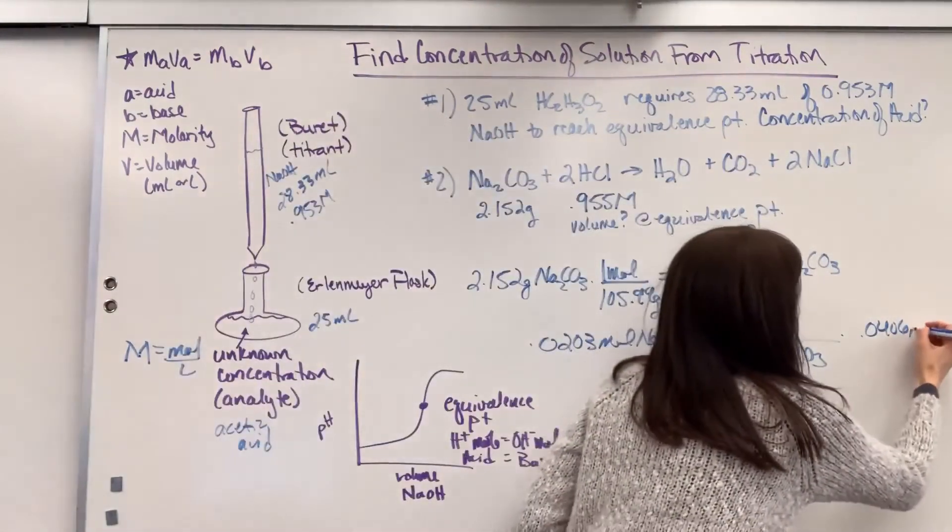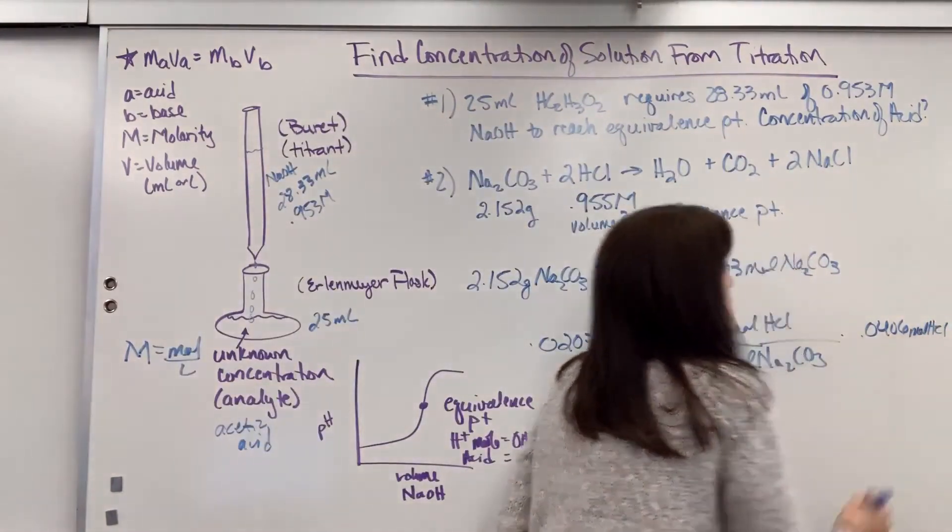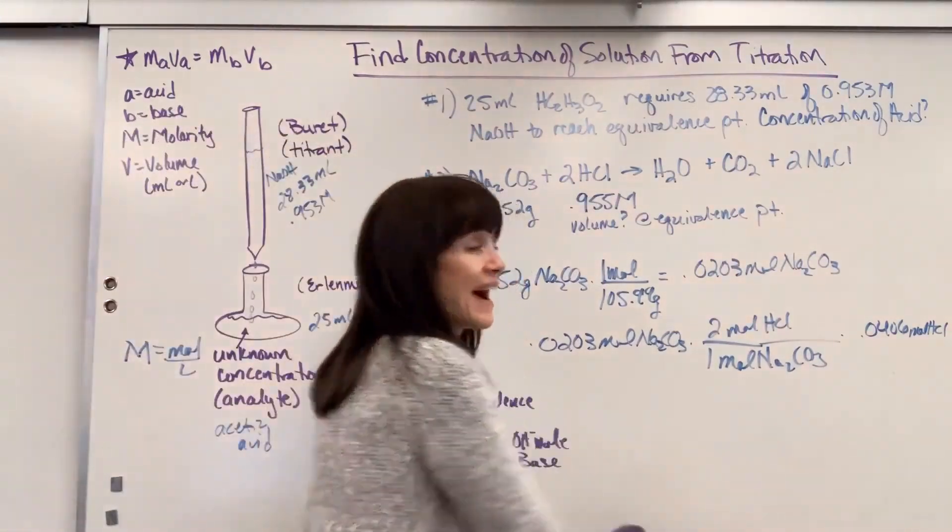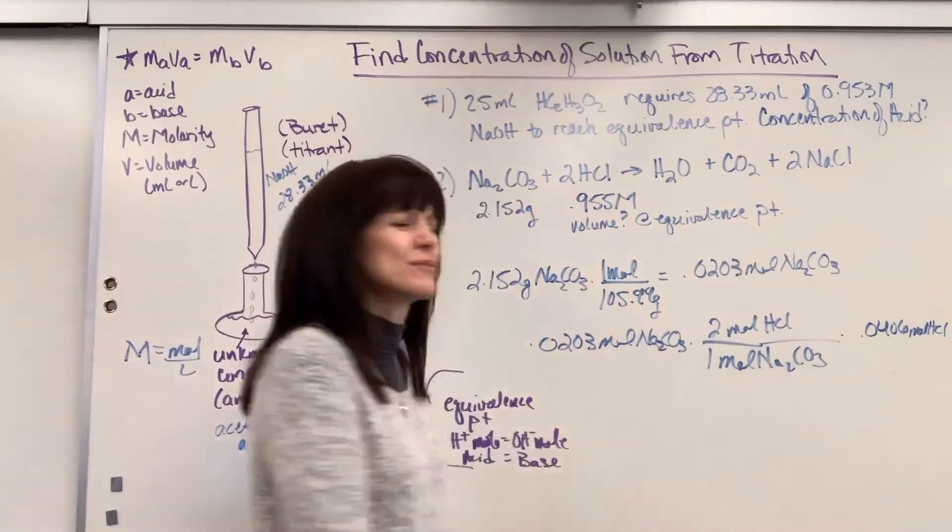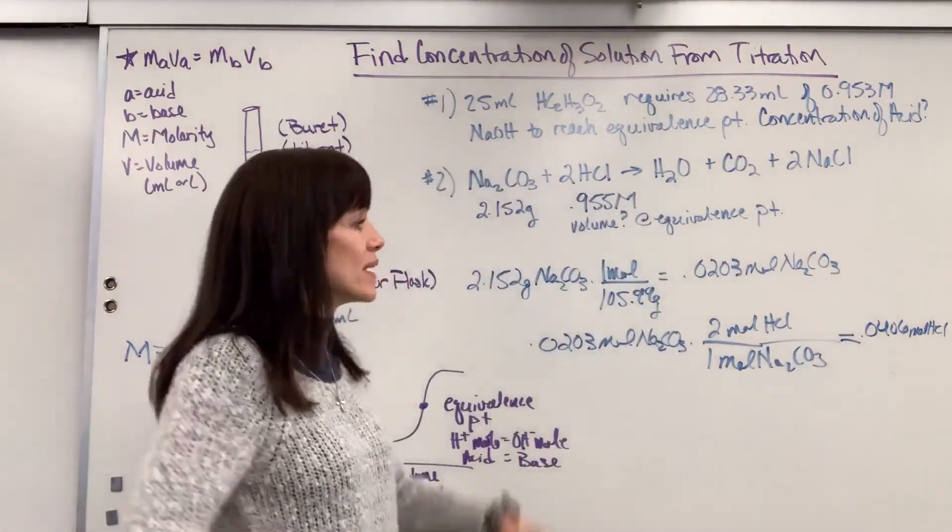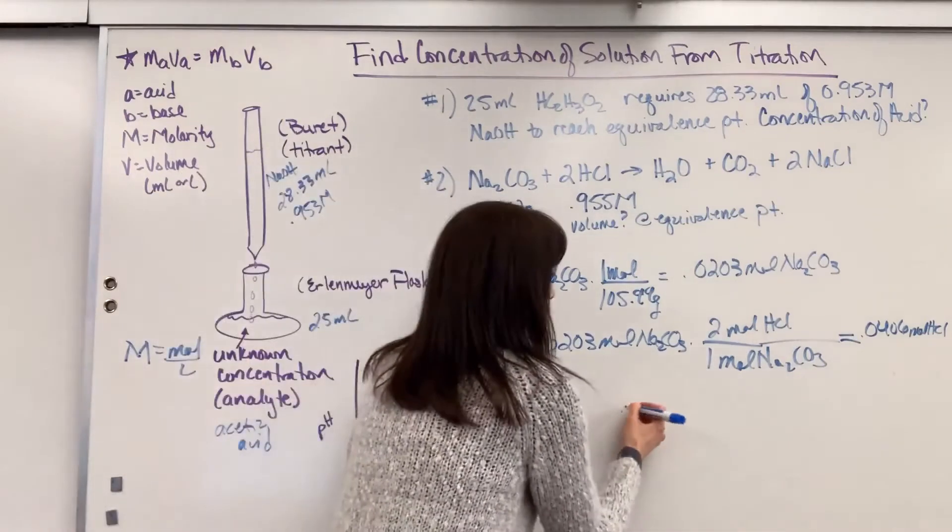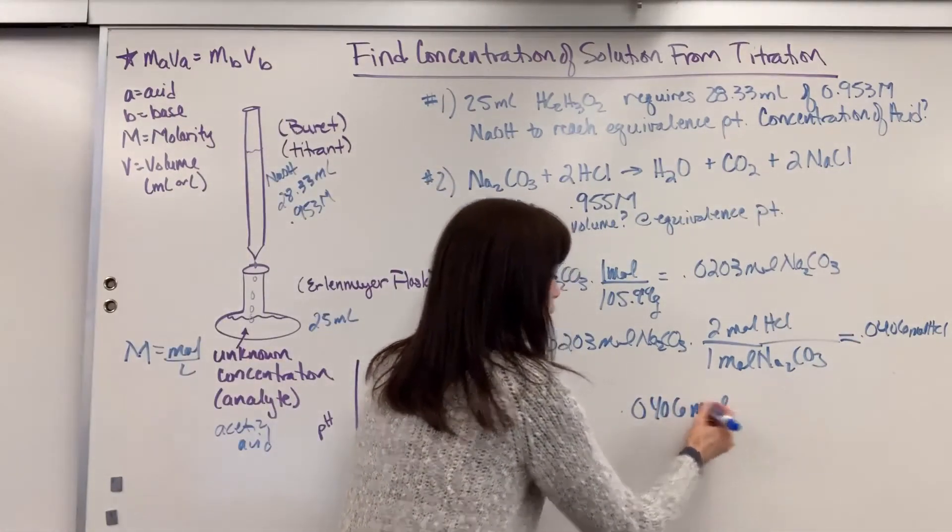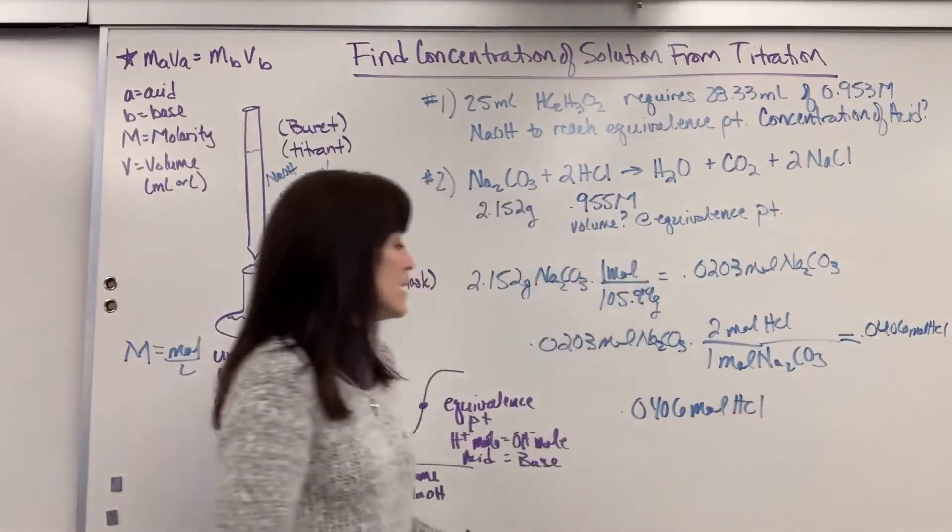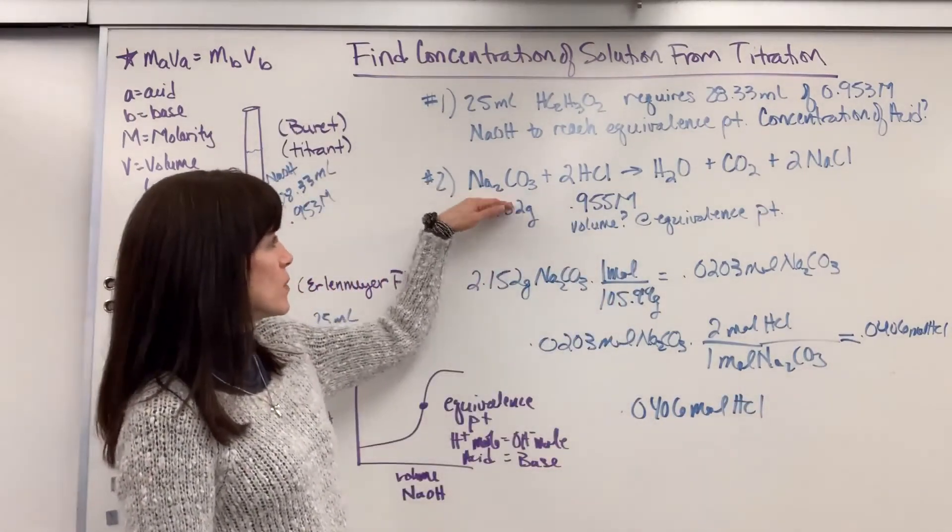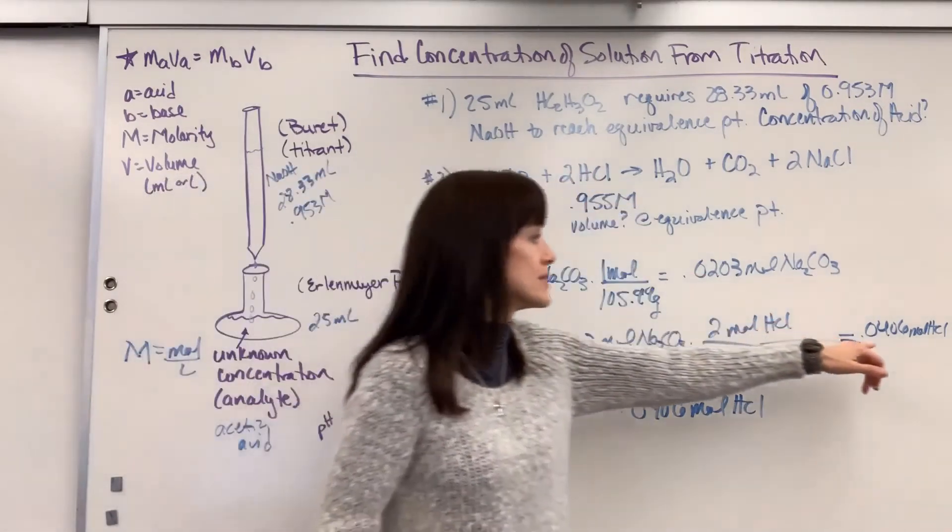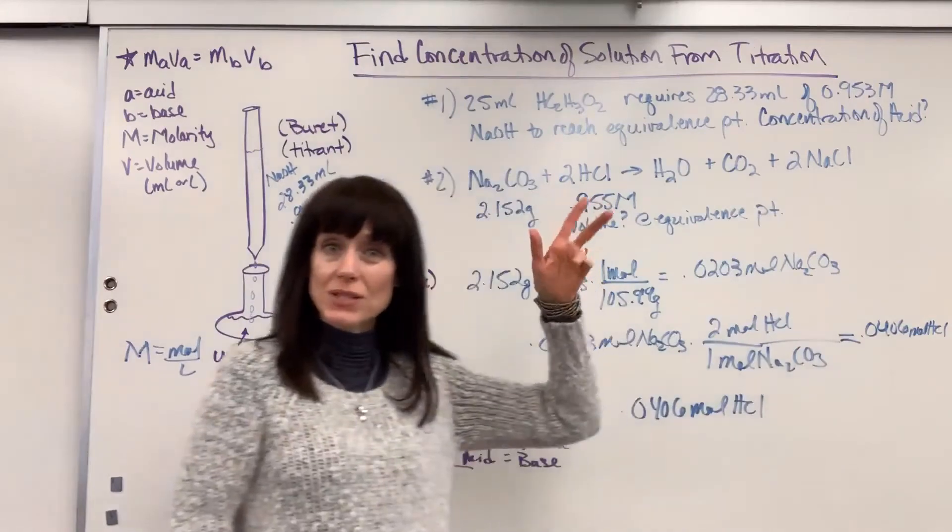That would be moles of HCl. But I want volume. So I'm going to actually add a step to this. Or, you know what? We'll leave that. Let's go ahead and just do equals. And I'll show you the last step. I'll make it very explicit. We have 0.0406 moles HCl. So I had this many moles. The 0.0203 has to react with 0.0406 because it's a 1 to 2 molar ratio.